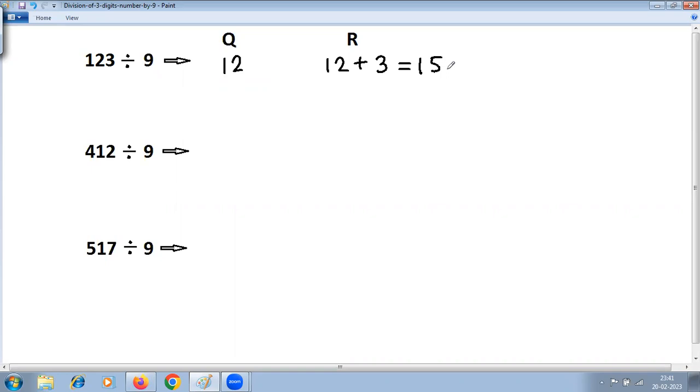Now 15 is above 9, so find quotient and remainder again using the same method. Remove the last digit, so 1 is the quotient. Take this 1 plus the last digit, that is 5, gives you 6. So 6 is less than 9, so this is the final remainder. Now the main portion: 12 plus this additional portion 1. Add this 1 to the main quotient, 12 plus 1, so the answer is 13. Quotient is 13, remainder is 6.